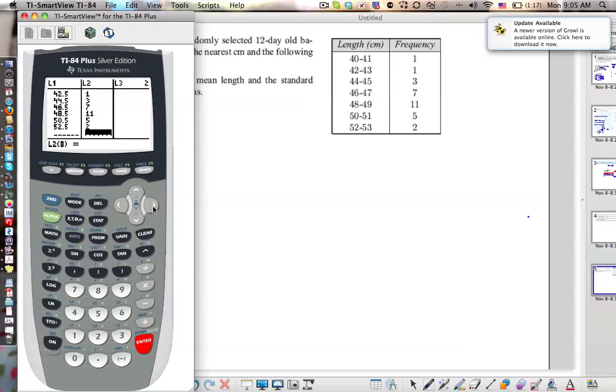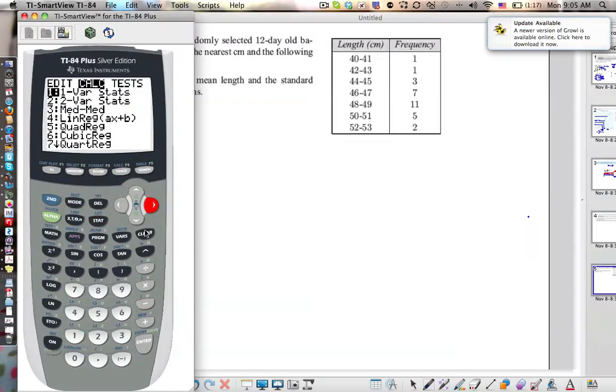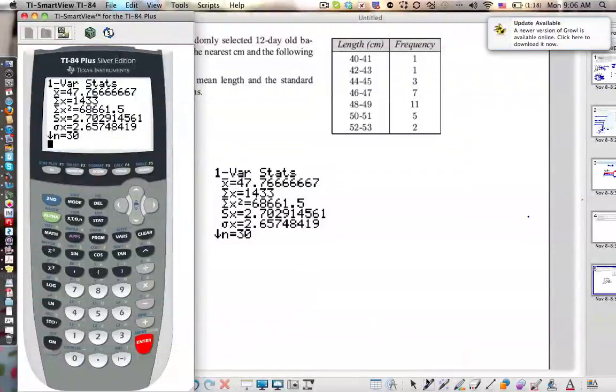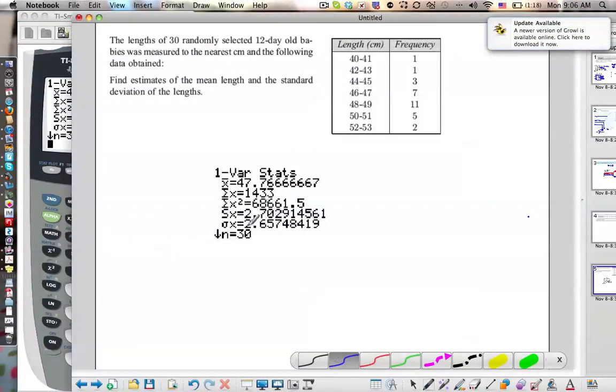All right. Data entry, not much fun, but important. So let's just do this very quickly. Stat, calc, single variable. L1 are the values. L2 is the frequency. You should know that by now. Enter. Which one do I take, Mr. Rops? Oh, you take the sigma. Sigma. So 2.657. There you go. There's your podcast. Have a good day.